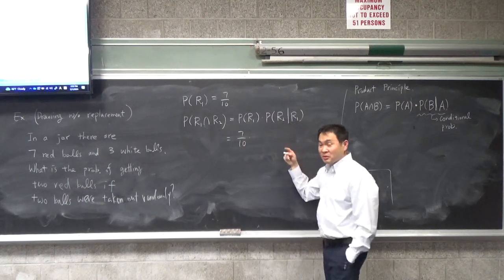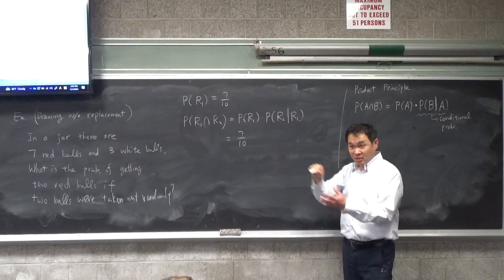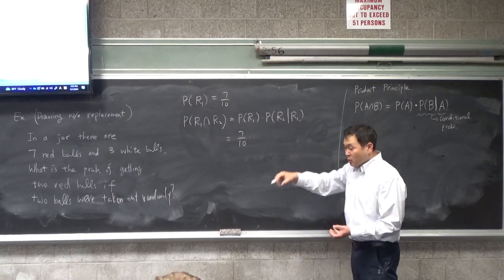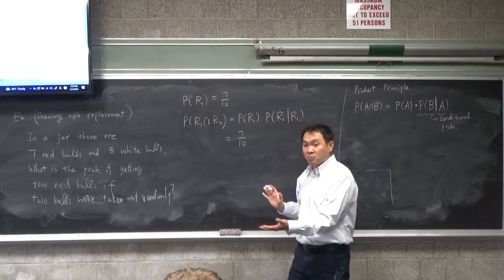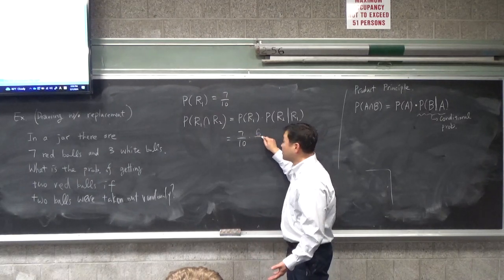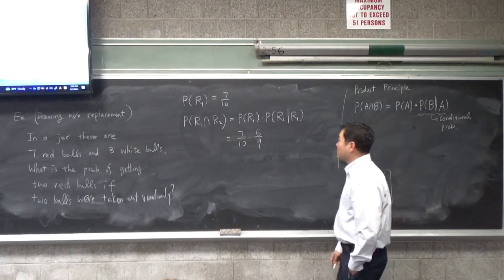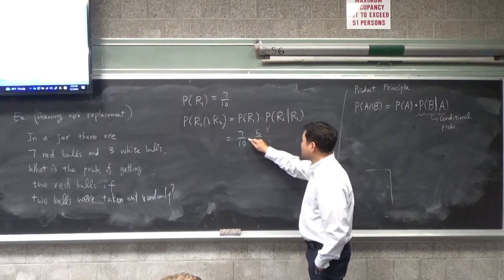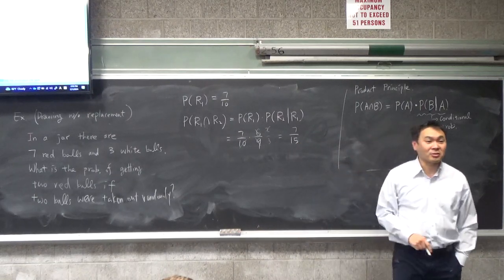We already know P(R1) is 7 out of 10. Now if the first drawing was red and you're not putting it back, you took one red bowl out. How many red bowls remain? Six. And how many white bowls? Three. So the probability of getting a red bowl on the second draw is 6 out of 9, which is two-thirds. So the answer is 7/10 times 6/9, which equals 7 out of 15.